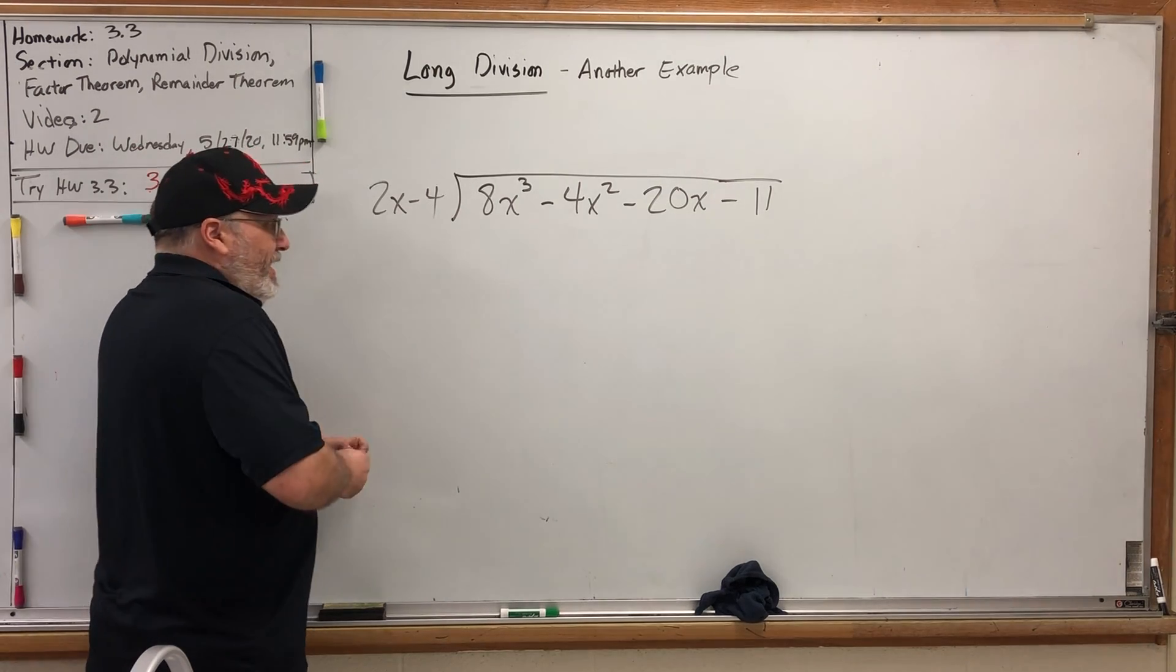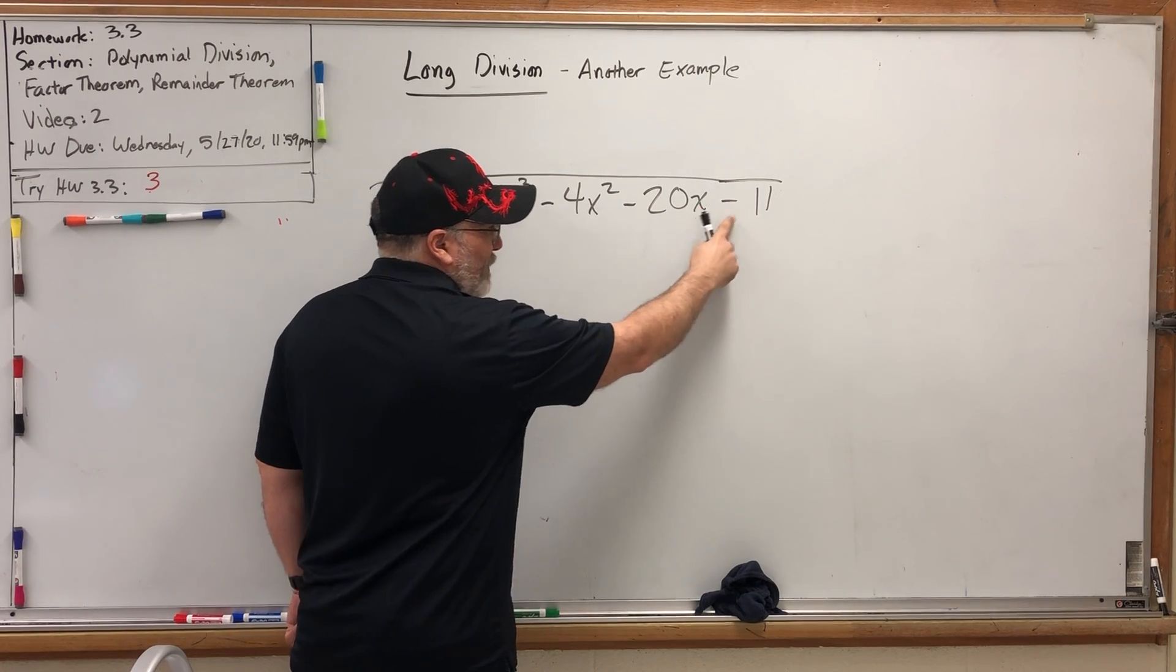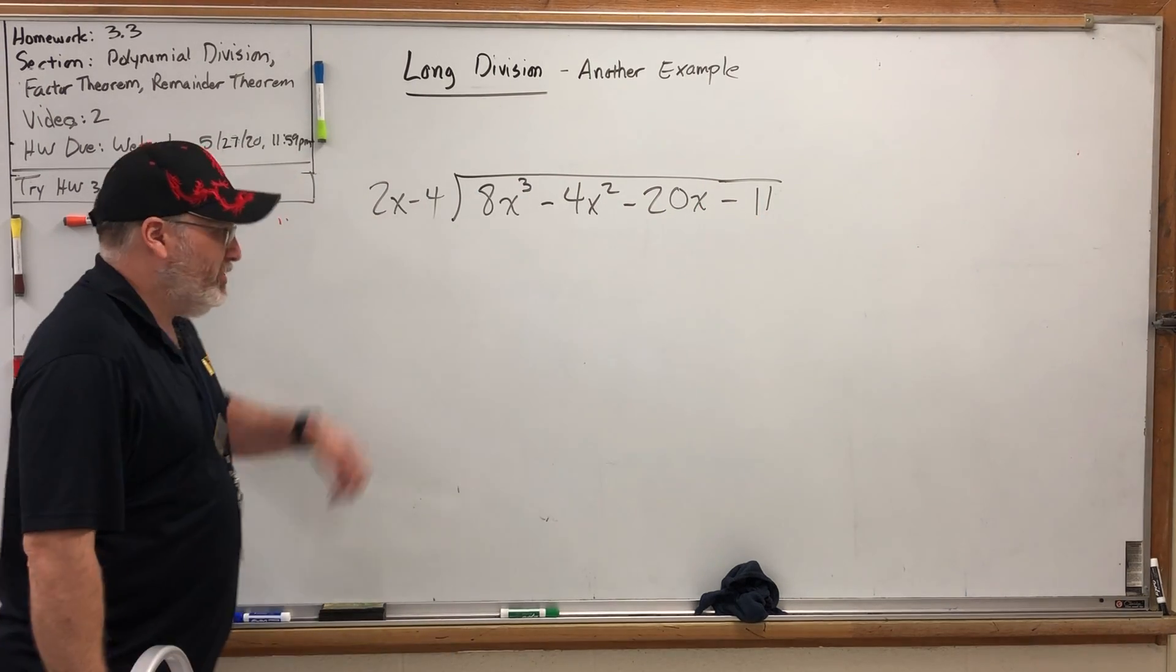So let's divide 8x³ - 4x² - 20x - 11 by 2x - 4.